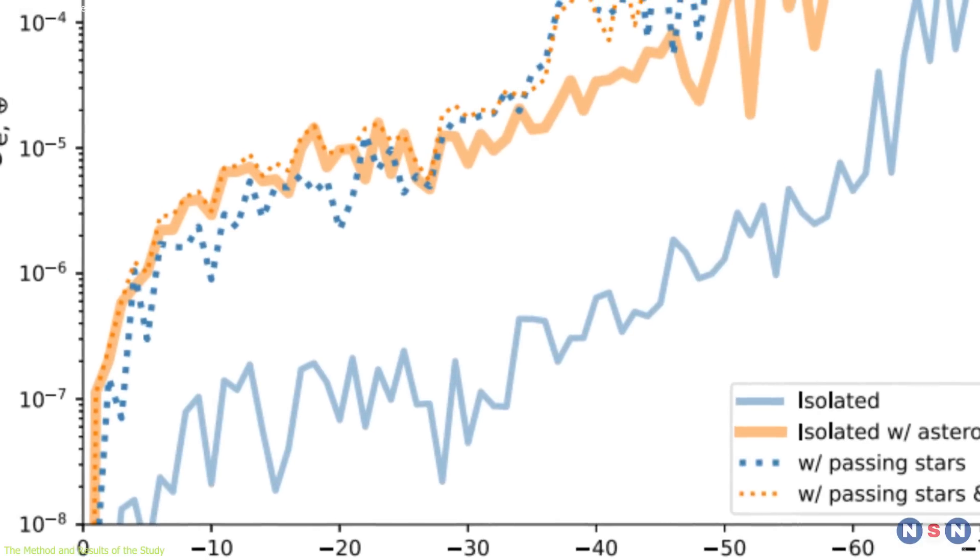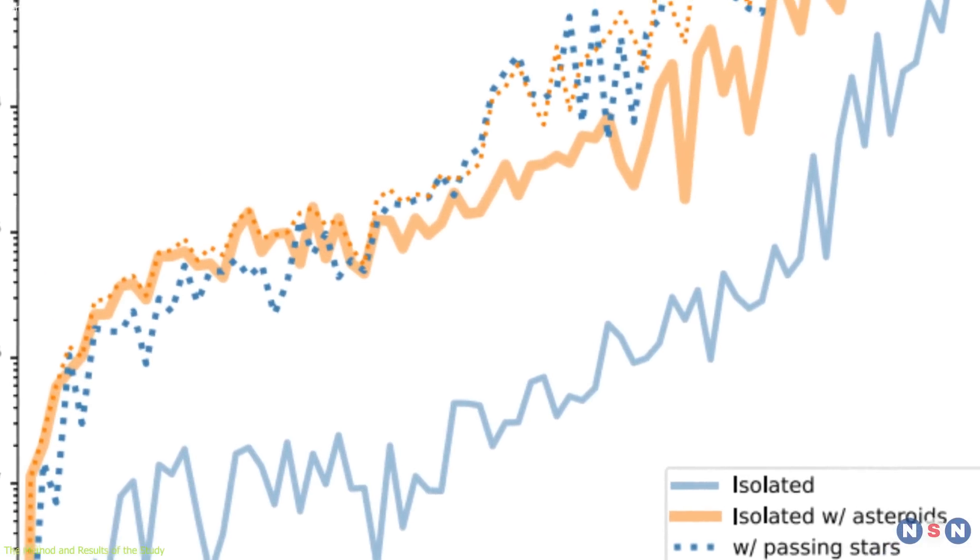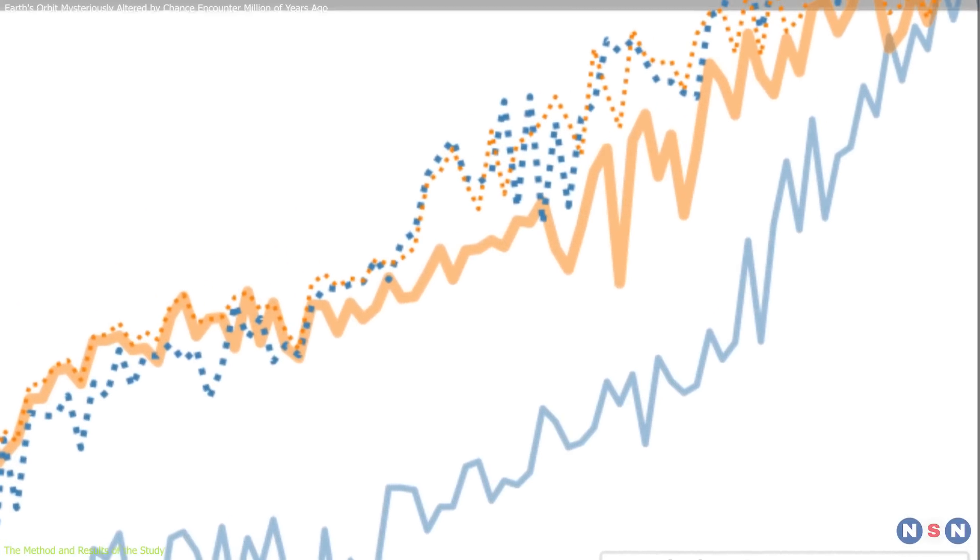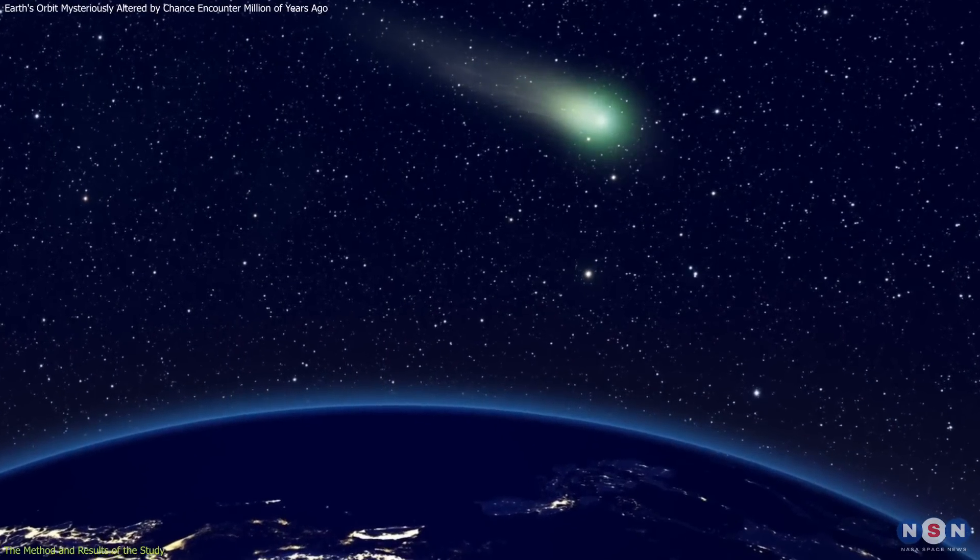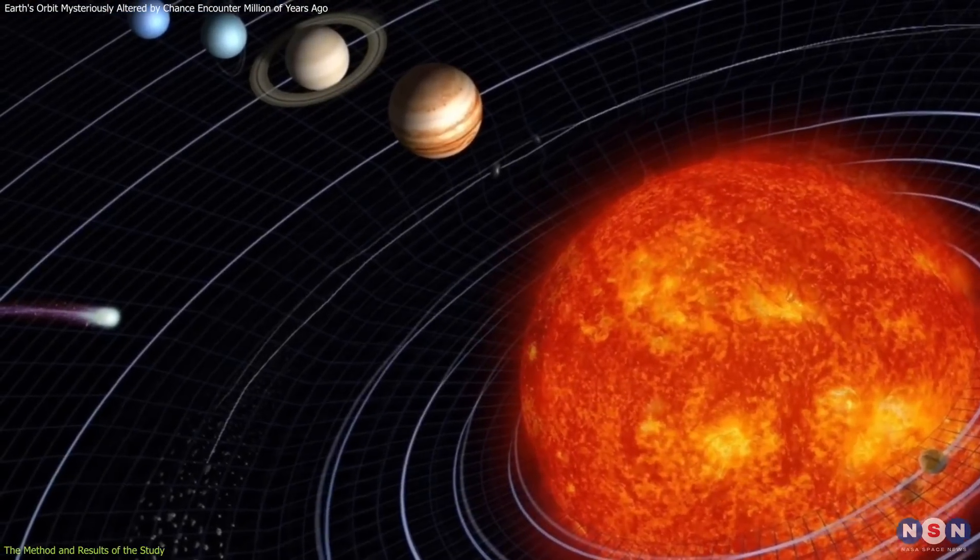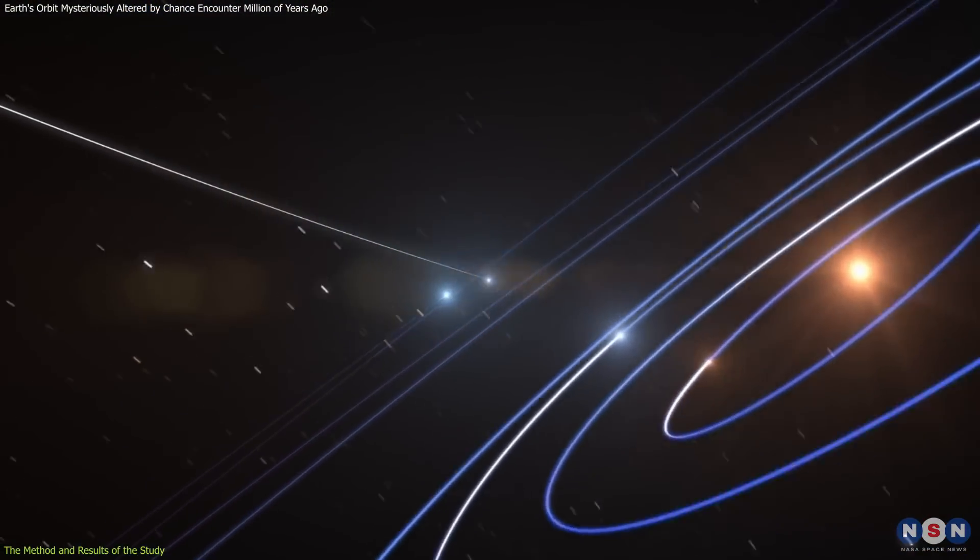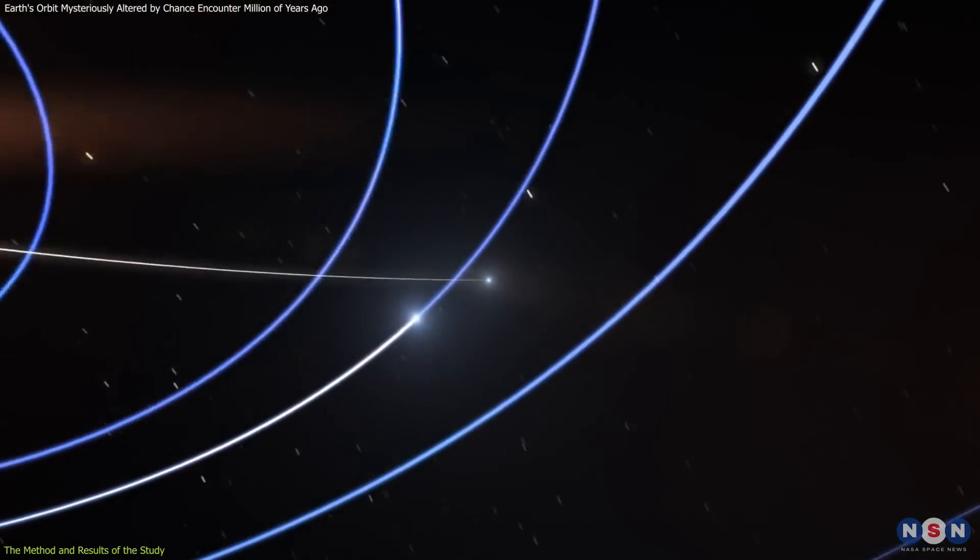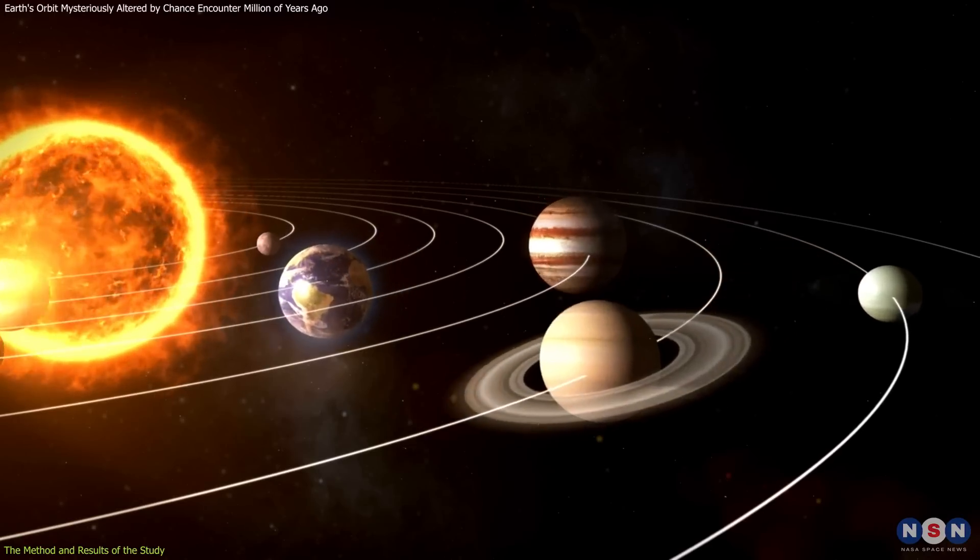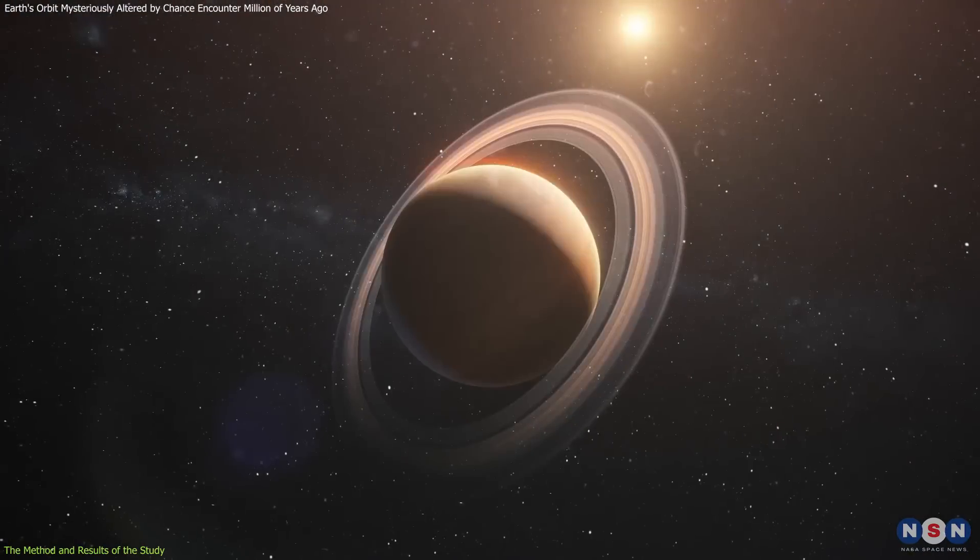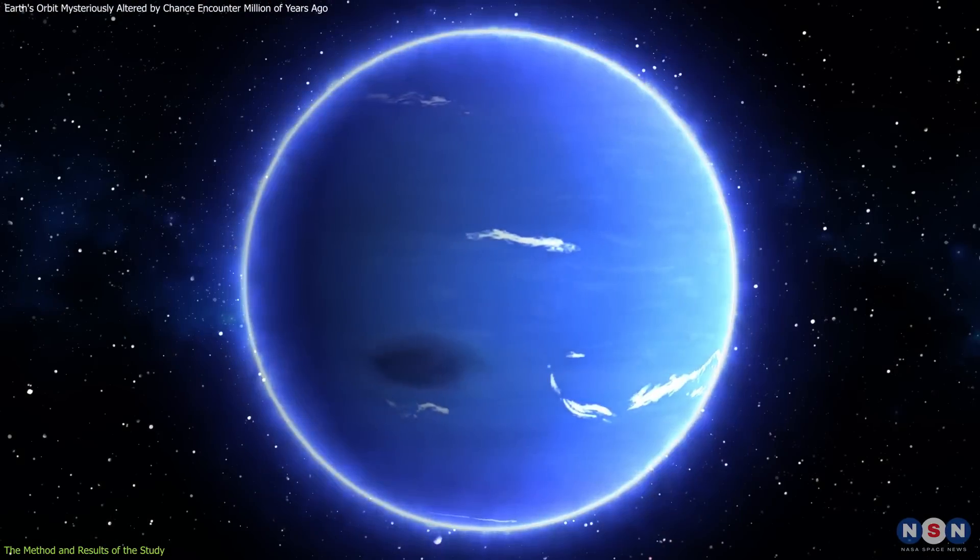The researchers ran thousands of simulations, varying the initial conditions and the properties of the passing stars, such as their mass, velocity, and distance from the Sun. They found that in some cases, a star grazing the solar system could have indeed altered the orbits of the planets, especially the outer ones, such as Jupiter, Saturn, Uranus, and Neptune.